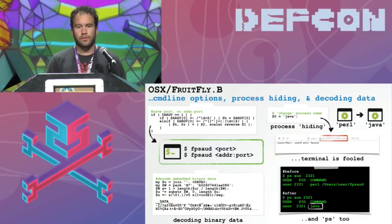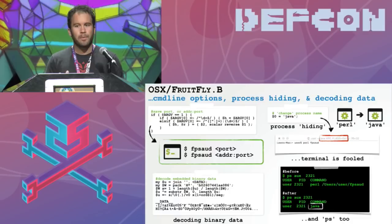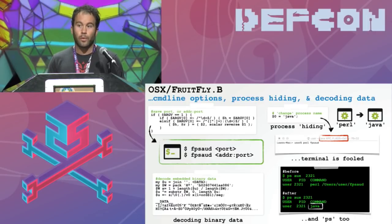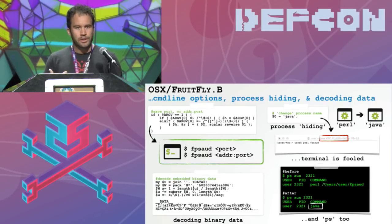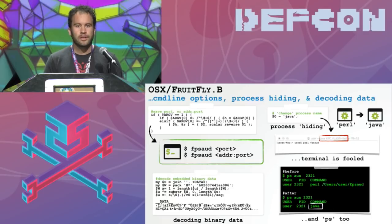Before the malware connects to the command and control server in the main processing block, it does a few other things. It processes some command line arguments, looking for an IP address or IP address and port of the C2 server. This is useful because it means we can specify our own when we execute the malware in a VM and have it connect to our custom C2 server. It also hides its process by changing args zero — this fools tools like PS — and finally decodes some binary data which turns out to be an embedded Mach-O binary.